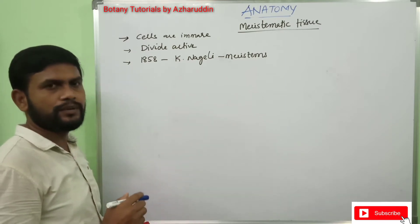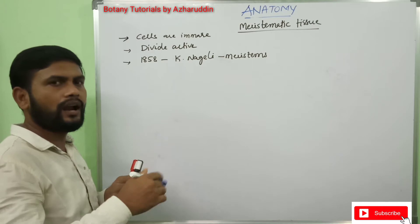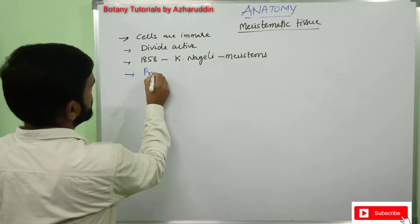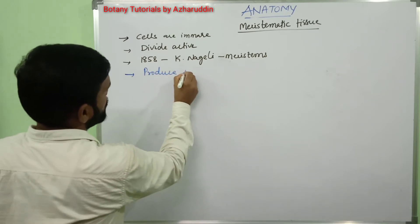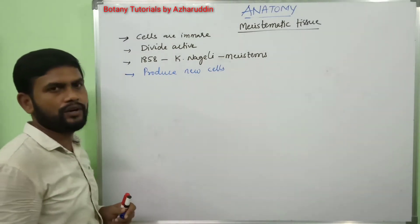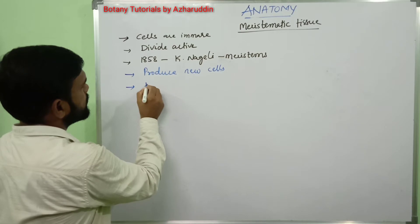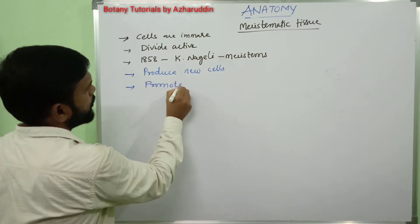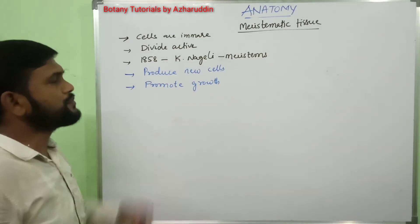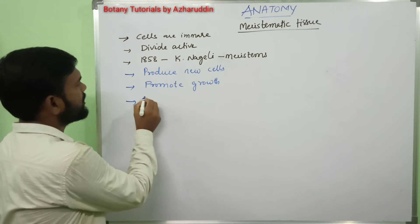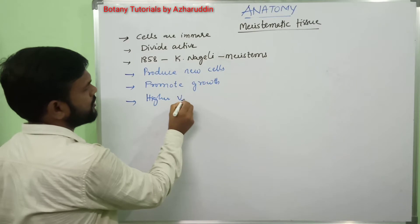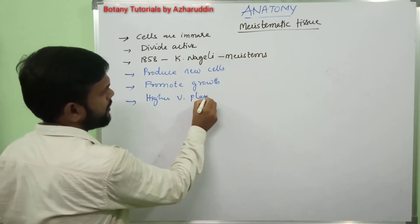These cells show active divisions — they divide and redivide to produce new cells. In this way they promote the growth of the plant body. These meristematic tissues are found only in higher vascular plants.